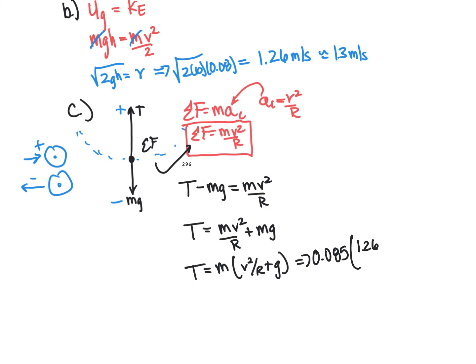And the mass of the bob is 0.085 times our velocity at the bottom, which is 1.26 squared, all over the radius.